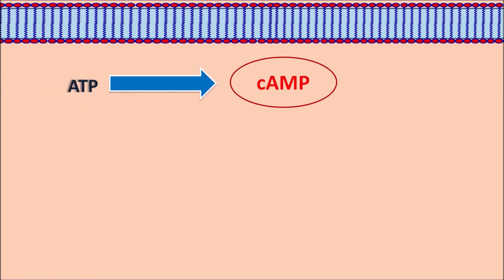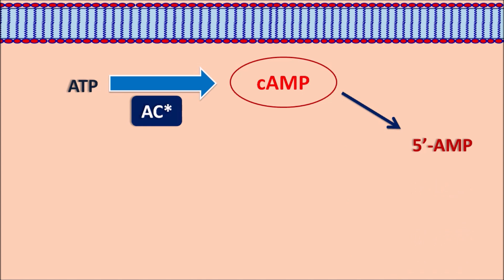Now let us see how lipolysis is controlled by other mediators. ATP is converted into cyclic AMP by the adenylyl cyclase system. Cyclic AMP activates protein kinases which activate hormone sensitive lipase, leading to lipolysis. However, within the cytoplasm, cyclic AMP can be converted into metabolites like 5-AMP by the enzyme phosphodiesterase. So phosphodiesterase can control lipolysis by metabolism of cyclic AMP.